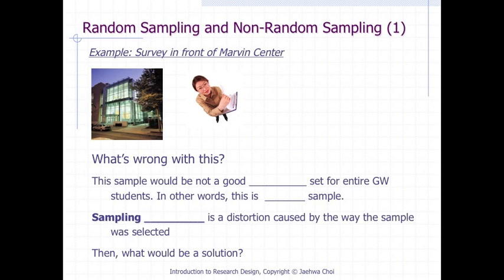This survey in front of Marvin Center example can help understand the concept of random sampling. Let's think about a hypothetical situation: you are collecting student responses on a new initiative for capturing GW students' opinions in front of the Marvin Center. Can you think about concerns on this type of sampling method? Is this random sampling? The answer is no. This sample would not be a good representative set for the entire GW students. In other words, this is a biased sample.